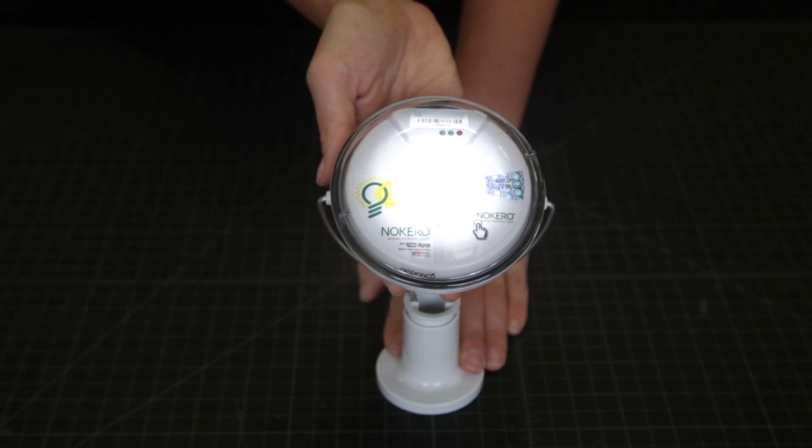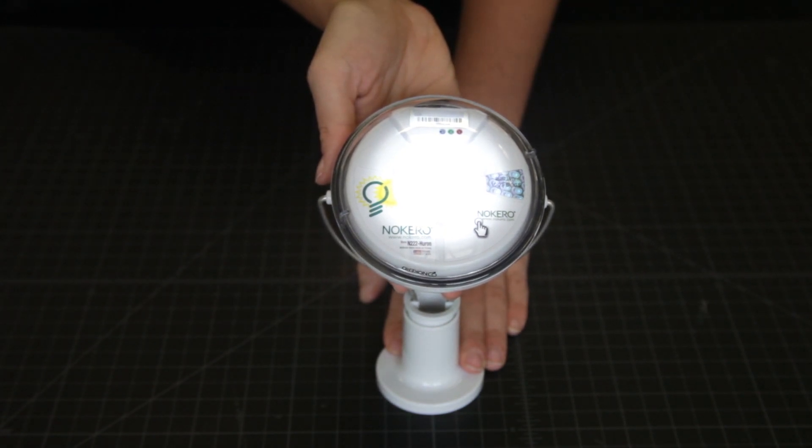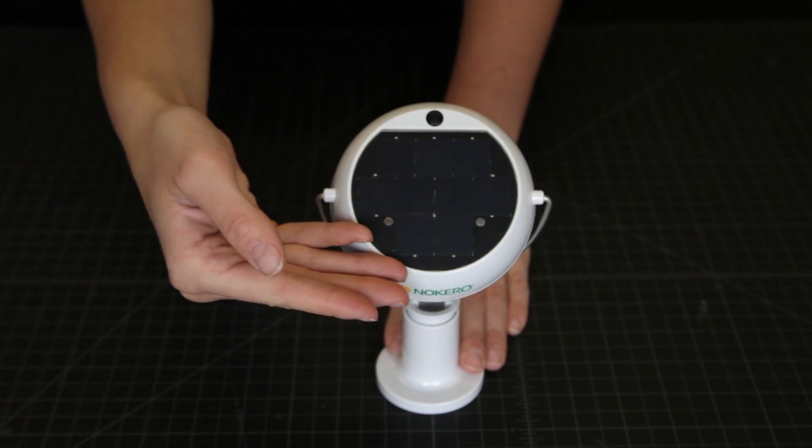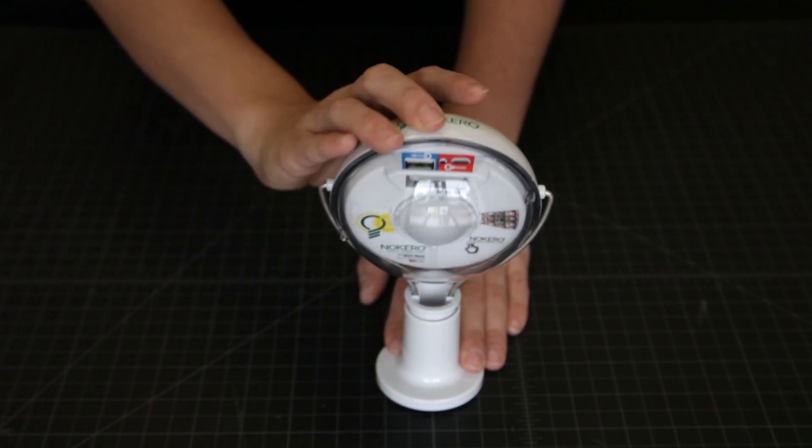The Nokero Huron N222 is an all-in-one powerful solar light bulb and phone charger. The Huron has a solar panel that charges a lithium-iron phosphate battery inside the housing.